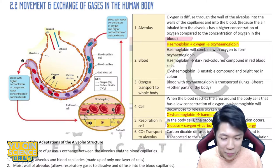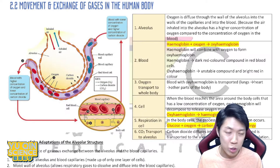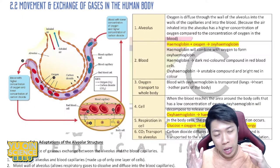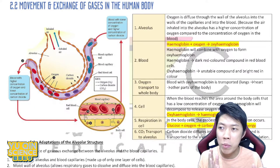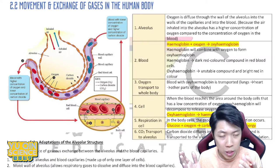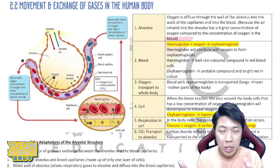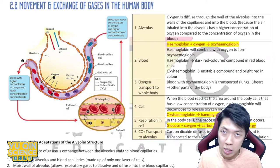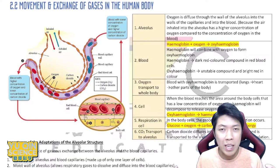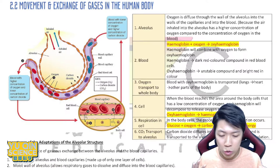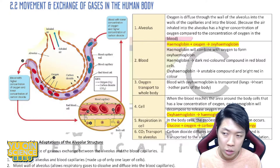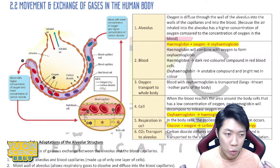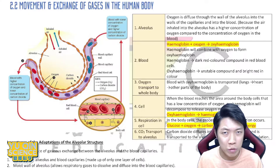We are only going to talk about 2.2 which is the movement of gases — diffusion that happens between your lungs and your blood capillary. Oxygen needs to travel from your lungs, combine with red blood cells, enter the blood vessels, and be transported throughout the body. This process is a bit complex so I'll focus on explaining the whole process.